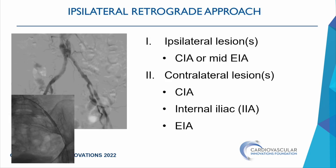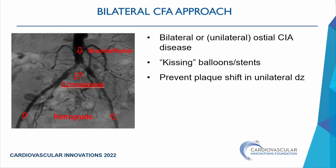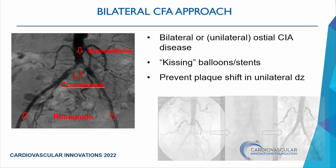The most common approach is ipsilateral retrograde for common and mid-external iliac lesions; contralateral crossover for contralateral common iliac, internal iliac, and external iliac lesions. For osteal aortoiliac disease requiring kissing balloons and kissing stents, bilateral femoral access is needed — or one brachial/radial versus femoral. For inferior aortic disease requiring reconstruction with covered stents using the CERAB technique, bilateral femoral access with one large-bore side is required.